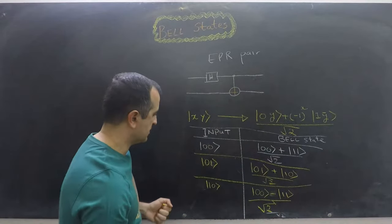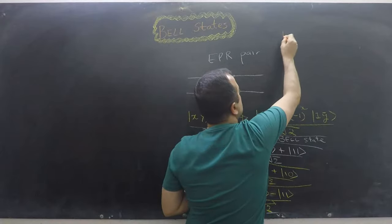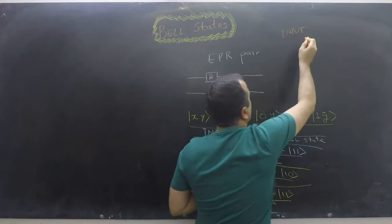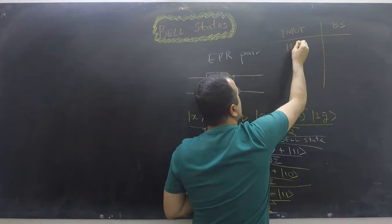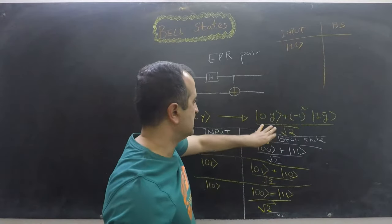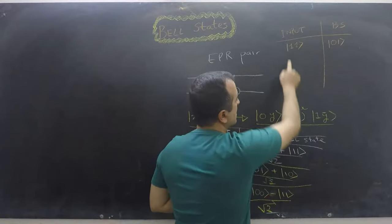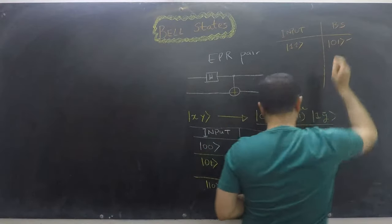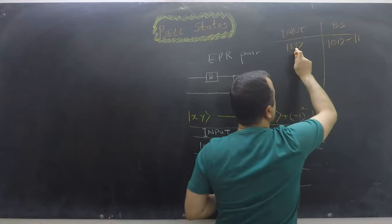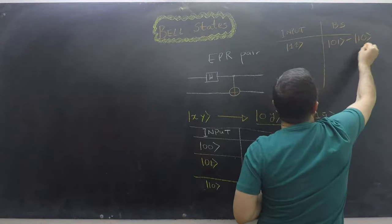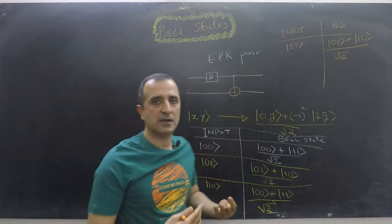Similarly, my last possible input is |11⟩. If I put |11⟩ into this formula then I will get |01⟩, and because x is 1 I will have a minus sign, then minus |10⟩ — because y is 1, y complement is 0 — divided by square root of 2. Those are my four different Bell states, and we have named them.